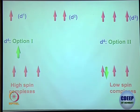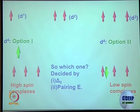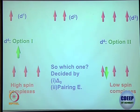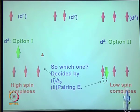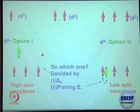It is not complicated at all. If delta-0 (10Dq) — the difference between T2g and Eg — is small, then T2g³ Eg¹ will occur because spin is maximized (high spin). If delta-0 is large and pairing energy is less than delta-0, then T2g⁴ Eg⁰ occurs — low spin configuration. The determining factor is whether pairing energy is higher or lower than delta-0.